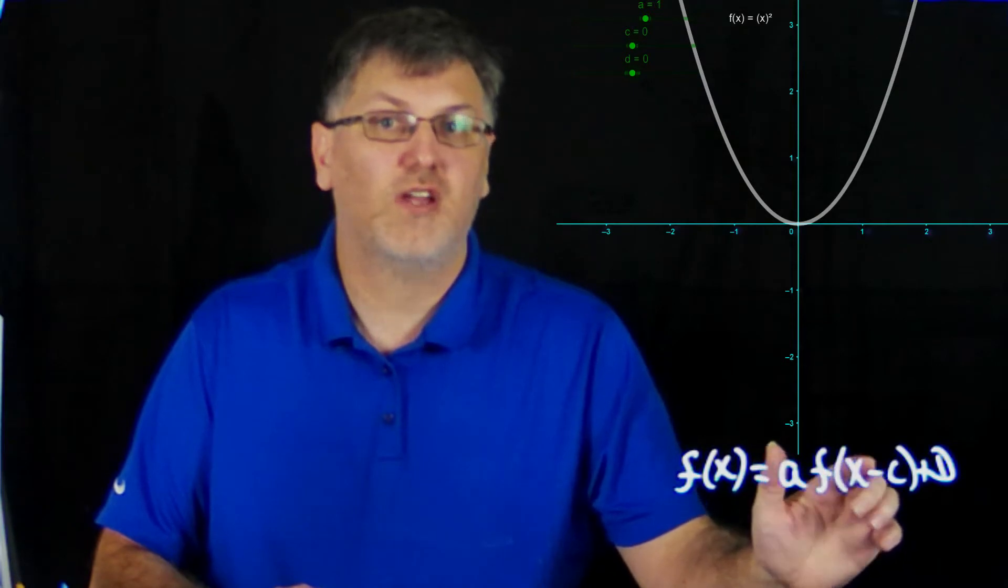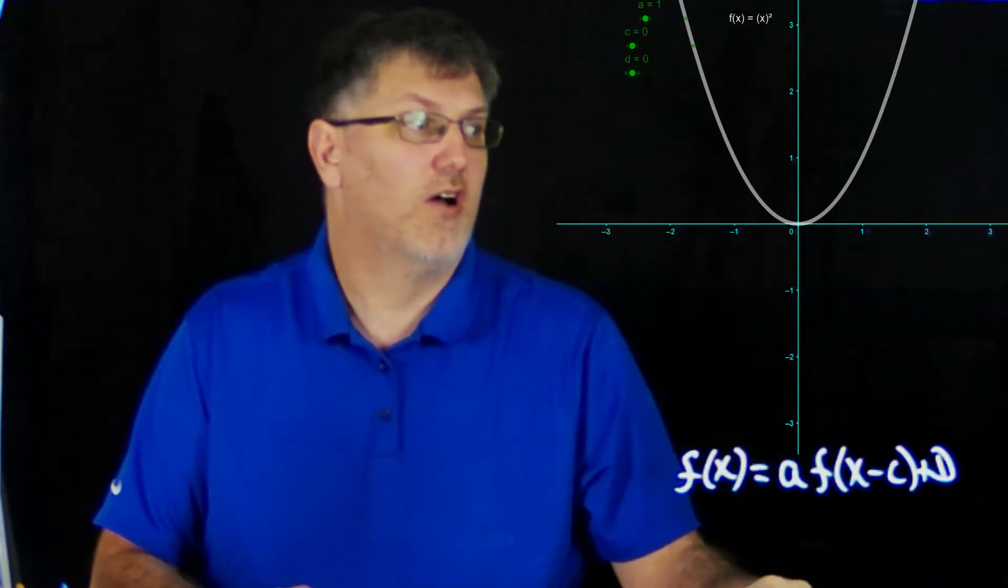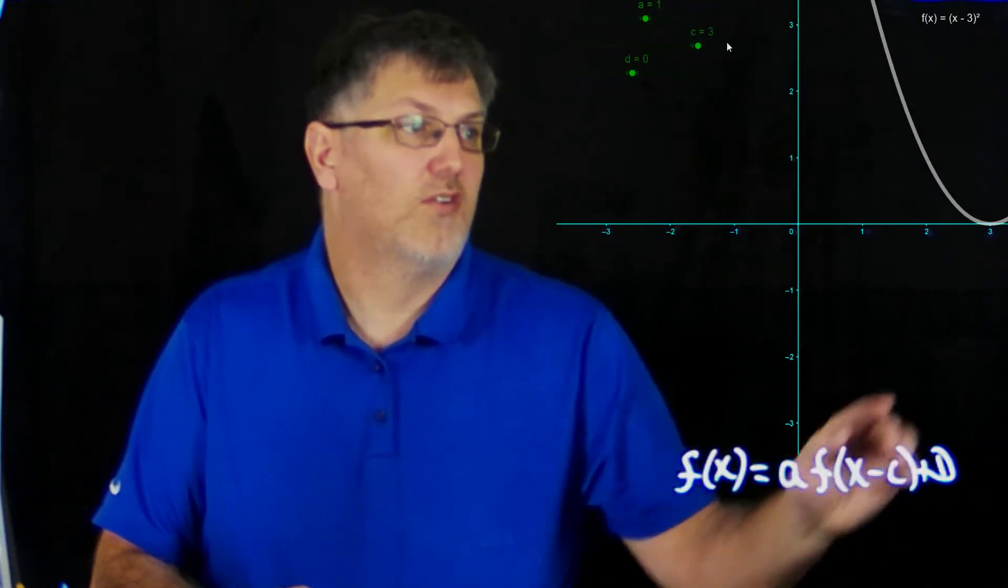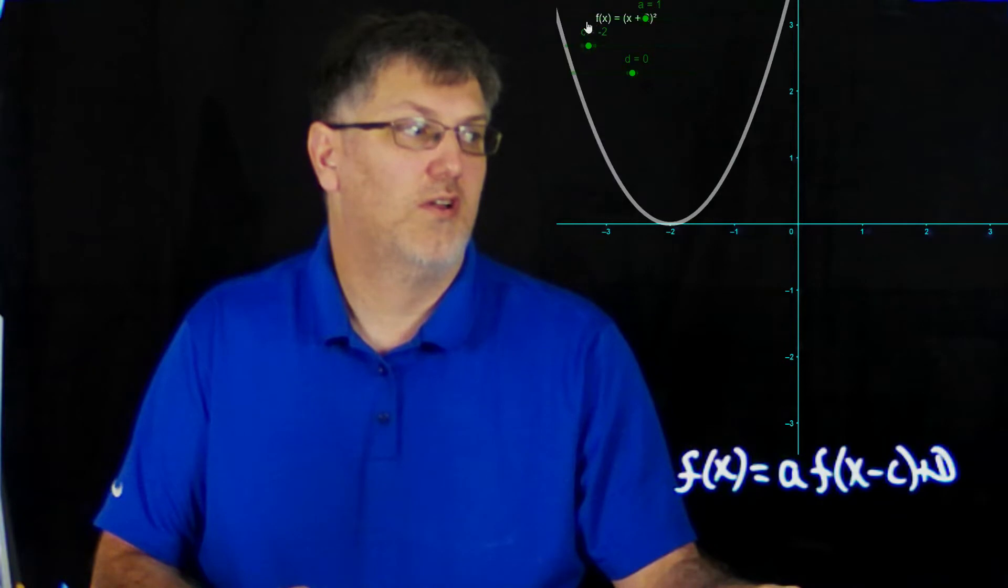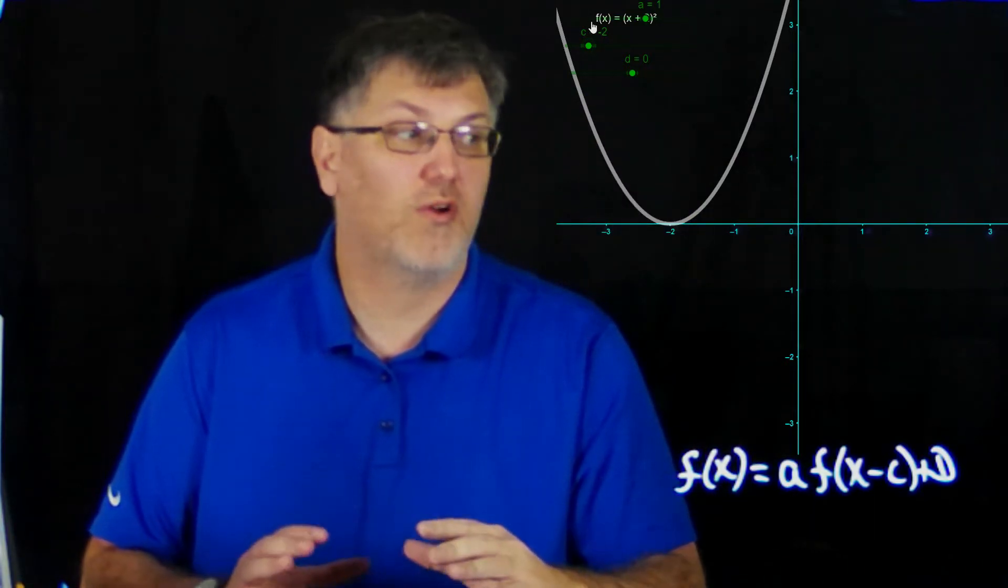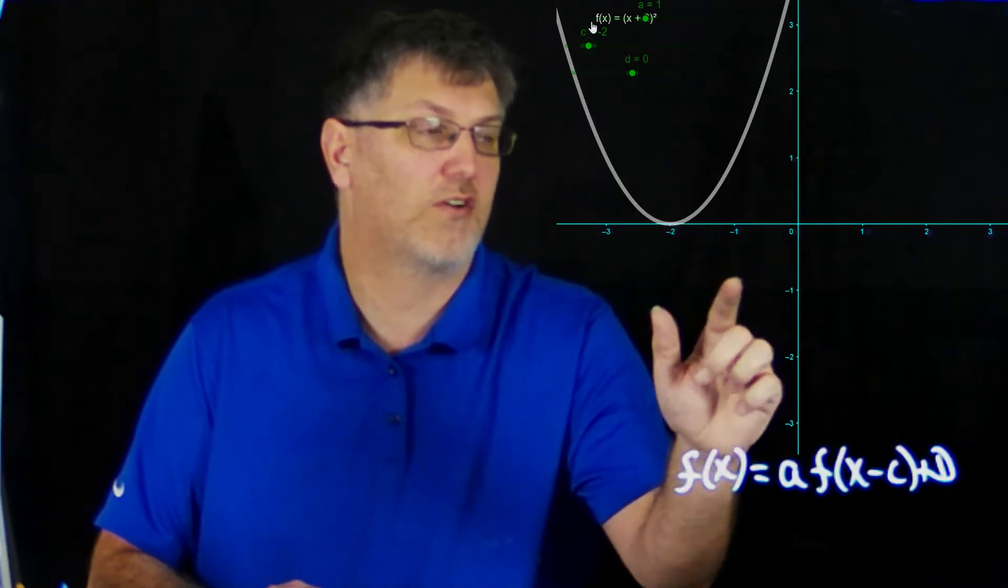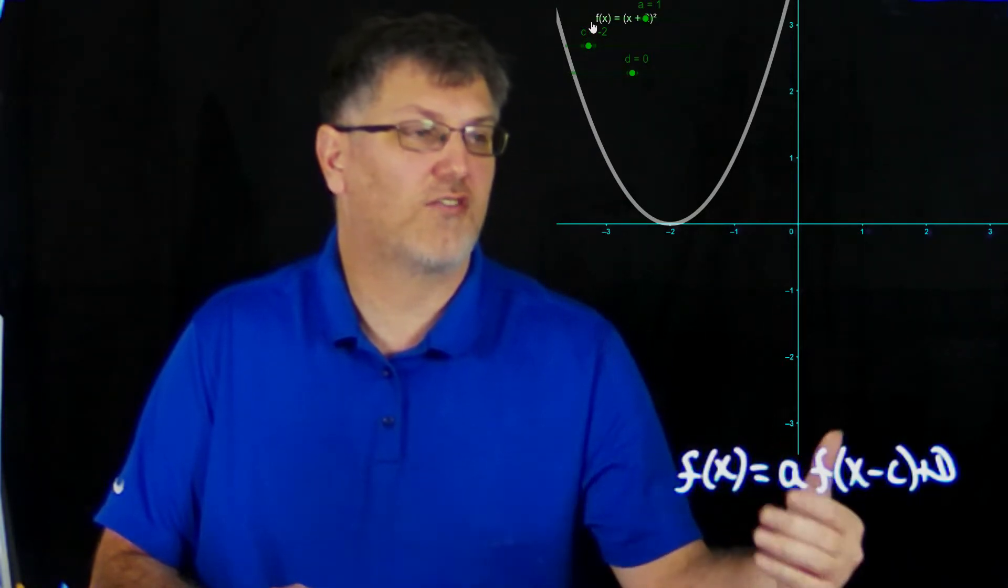So I'm going to do c first. c is affecting the x-axis, so it's going to move along the axis here, moving horizontally. As I move it along the axis, you can see that it keeps its basic shape. All the way over here at 3, it's still keeping its basic shape. As I move it back over, it still keeps its basic shape. So really what you have to remember about c, because of this minus right here, it's actually doing something opposite.